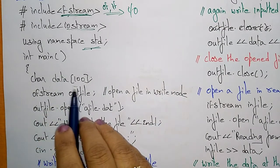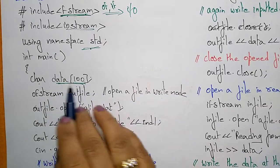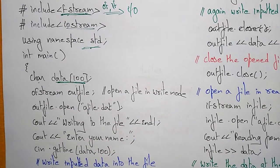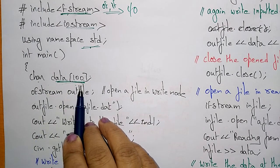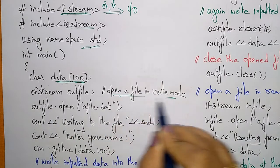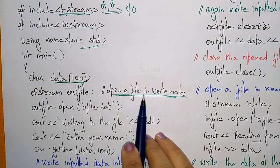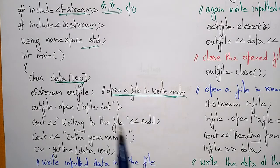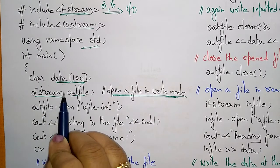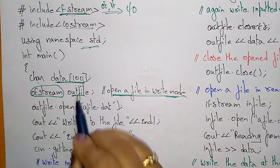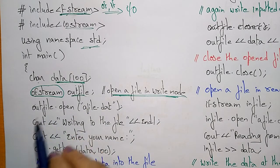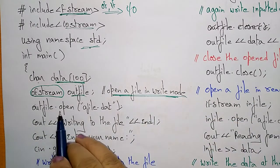Here I declared an array: char data[100]. That means you can insert up to 100 characters in the array. Now first I am opening a file in write mode because I want to write data to a file, and after that that data will be read. For write mode, ofstream is used. The object is 'outfile'. Whatever operation you do, first open the file: outfile.open.